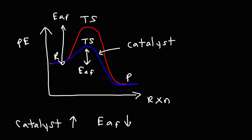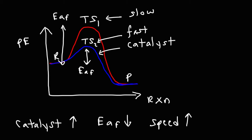How does that affect the speed of the reaction? TS1 is at a higher energy, so that's going to be a slow reaction. TS2 is the catalyzed reaction — because the activation energy has been reduced, that reaction will occur faster. So the effect of adding a catalyst in a chemical reaction increases the speed, or the rate, at which the reaction occurs, and it does so by lowering the activation energy of the transition state.